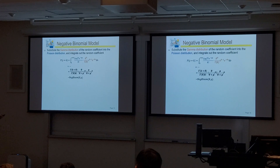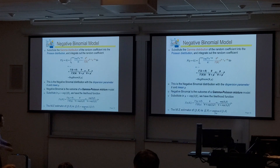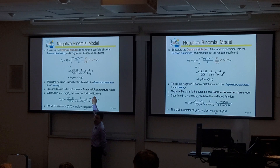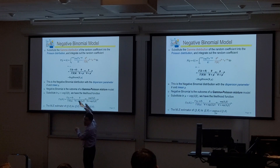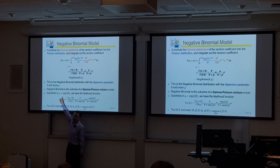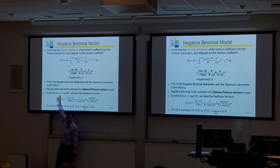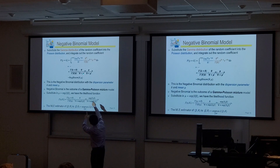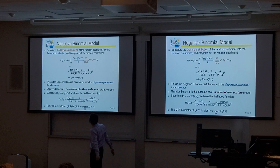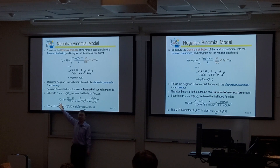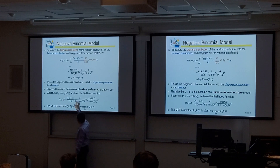What are the coefficients to be estimated in a negative binomial model? The usual beta coefficients — but in addition, also theta. Theta is also a model parameter determining the dispersion of the negative binomial distribution. So if we have k x-variables, the negative binomial model estimates k plus 2 coefficients total: k betas, plus the intercept (beta-zero), plus theta.